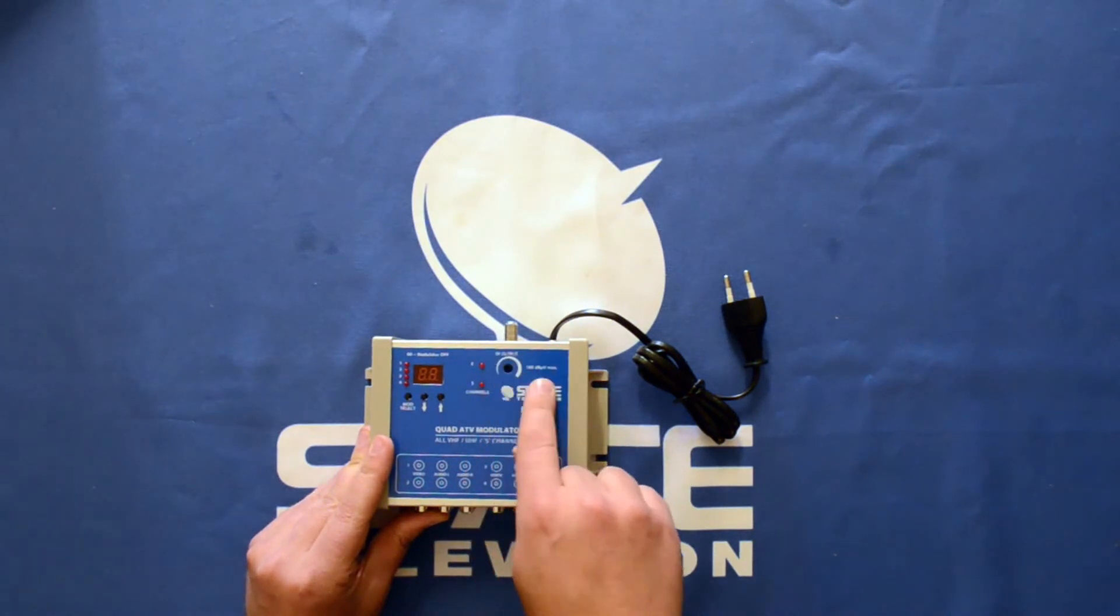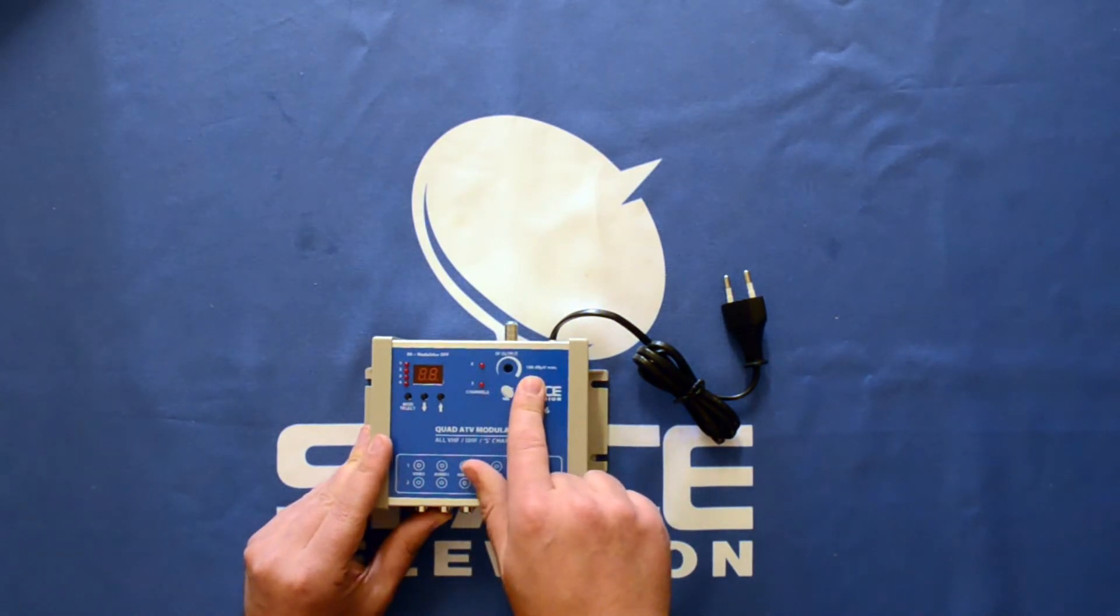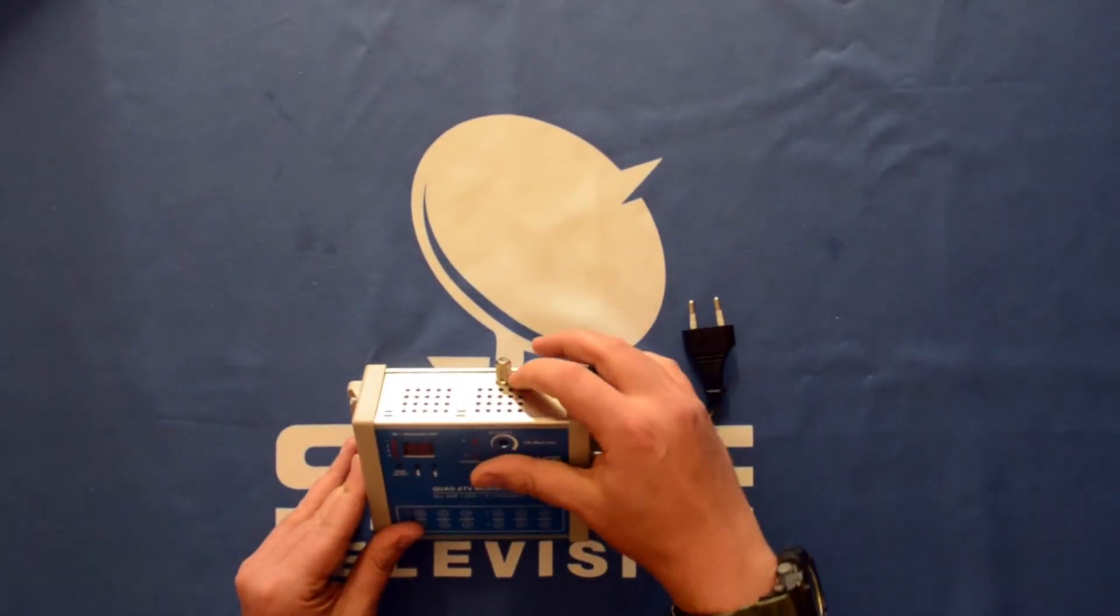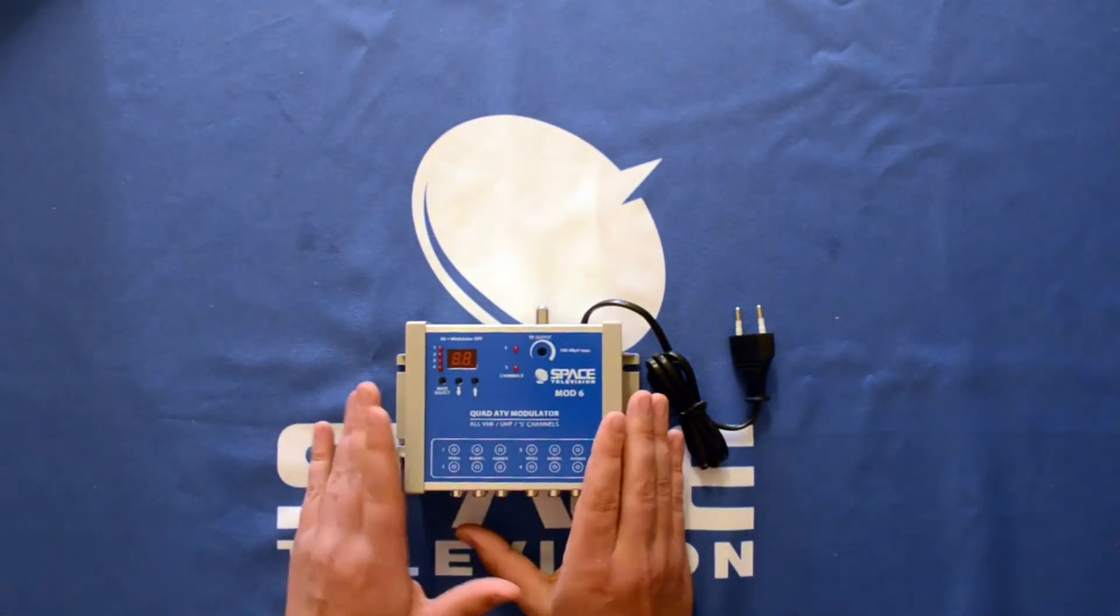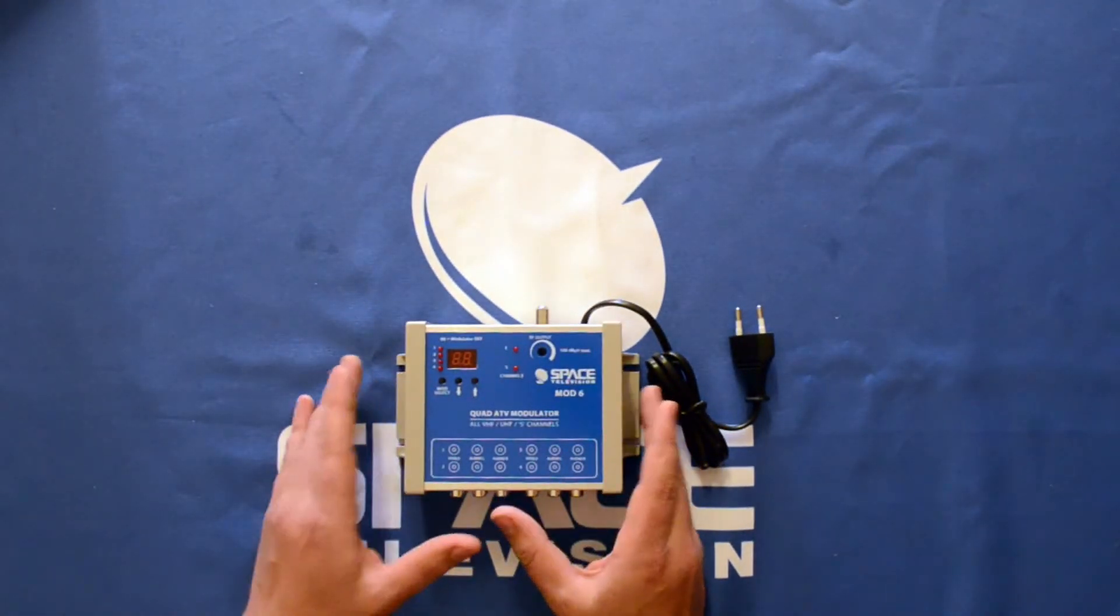There onto the potentiometer. So the maximum output is 100 dB microvolts which will come out of this port over there. So this is a very cost-effective solution when you want to set up a small guest house TV system.